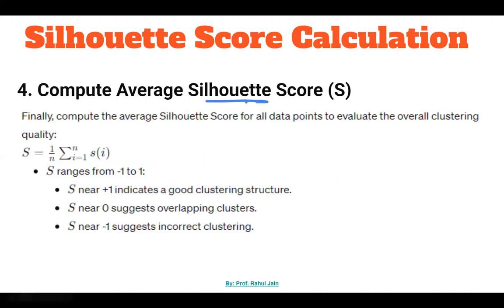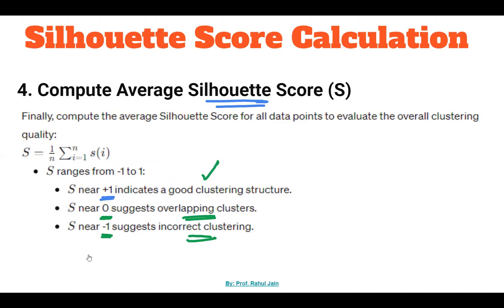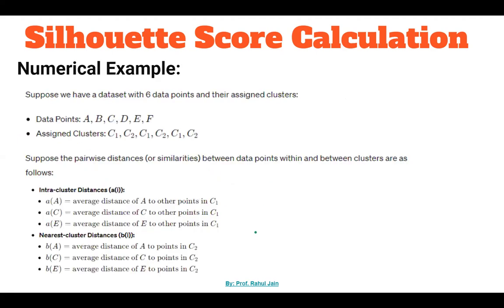Finally, we calculate the average silhouette score, which is the average of all individual silhouette scores. If the final silhouette score is closer to +1, it indicates a good clustering structure. If it is 0, it suggests overlapping clusters. If it is −1, it suggests incorrect clustering, meaning some data points might belong to another cluster.